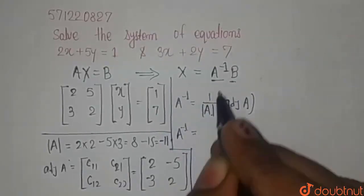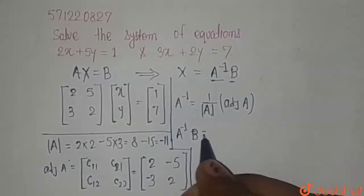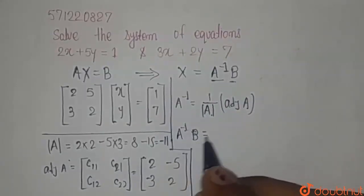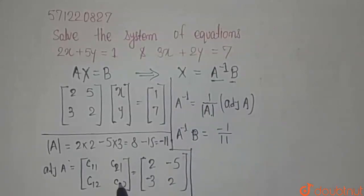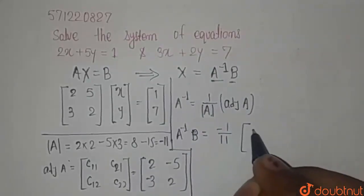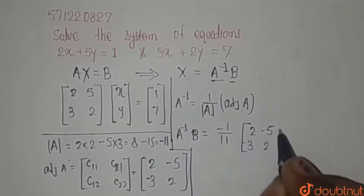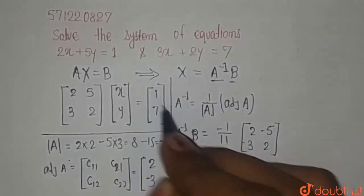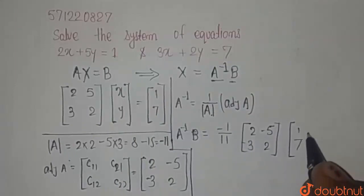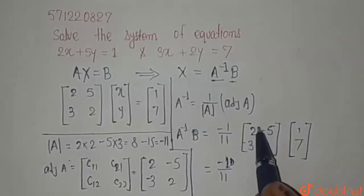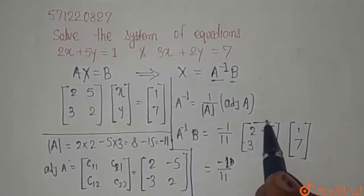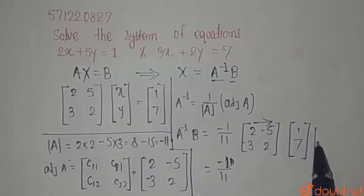By putting these values, A inverse B equals minus 1 over 11 multiplied by the adjoint of A, which is the matrix with entries 2, minus 5 in the first row and minus 3, 2 in the second row, and then B, the column matrix 1, 7, is multiplied. We know that multiplication takes place as each row is multiplied with this column.